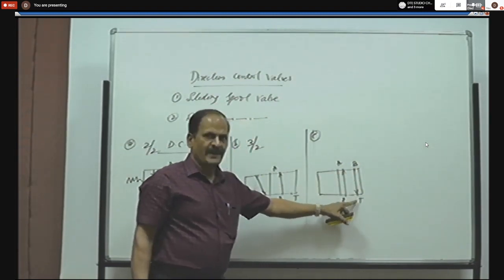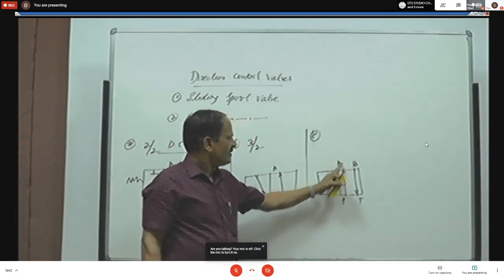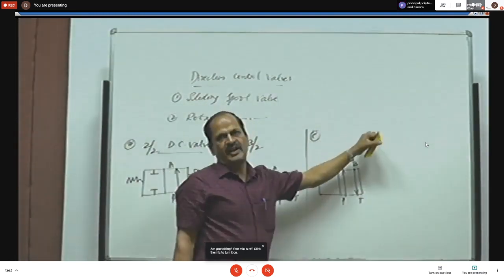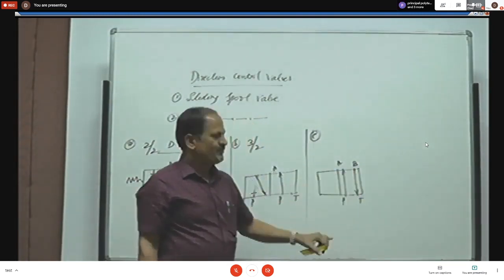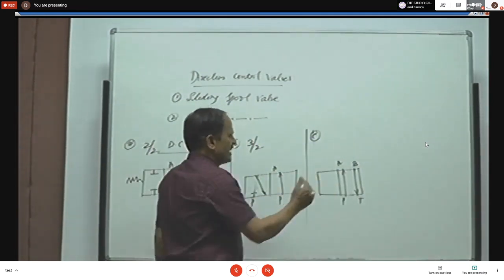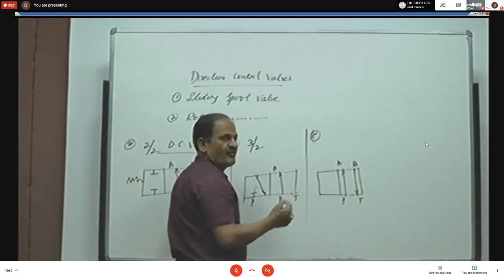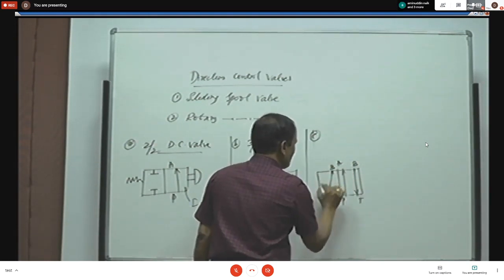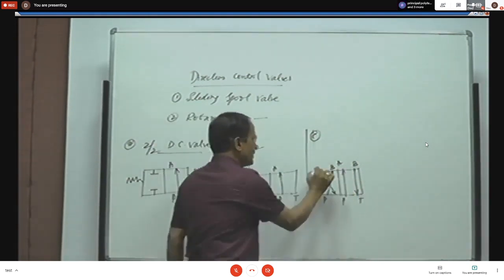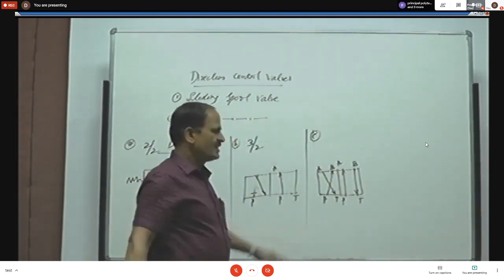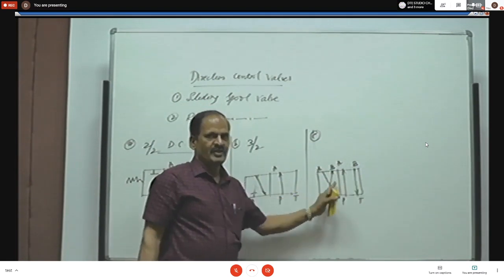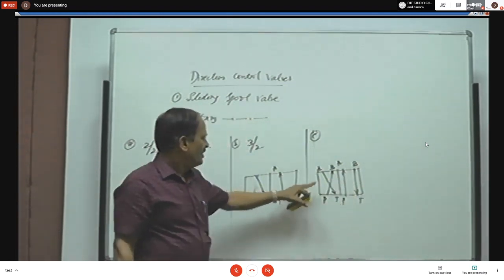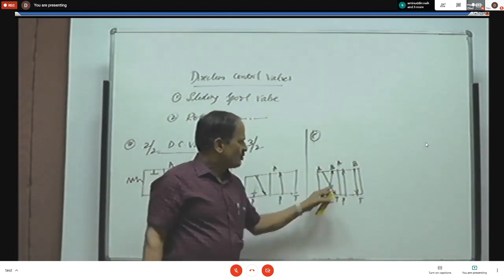In the case of 4x2, there are two positions. In the first position, fluid flows from P to A — fluid enters one end of the cylinder and some work is done. The fluid present at the other end of piston is returned back to the reservoir from B to T. In the second position the direction of flow is reversed: fluid flows from P to B and returns from A to T. So in both directions the piston can be reciprocated. This is the symbolic representation of a 4x2 DC valve.